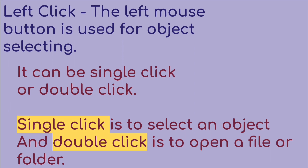Left click: the left mouse button is used for selecting objects. There are two actions for the left click button — single click and double click. Single click means we are clicking the left click button once. Double click means we are pressing the left button two times quickly without moving the mouse.